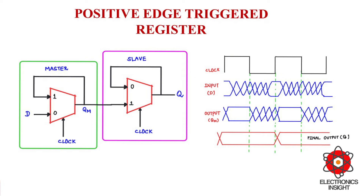Now let us set clock equal to 1. The slave stage will try to sample the output of the master stage because when clock equals 1, the master stage will be in hold mode since it is a negative latch. In the slave stage, which is a positive latch, when clock is equal to 1, the slave stage samples the output of the master stage QM while the master stage is in hold mode.